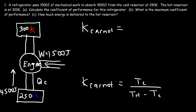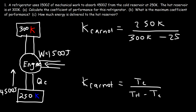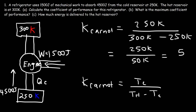The temperature of the cold reservoir is 250 Kelvin and the hot reservoir is 300 Kelvin. 300 minus 250 is 50. So this is 250 divided by 50, which equals 5. The maximum coefficient of performance for this refrigerator is 5.